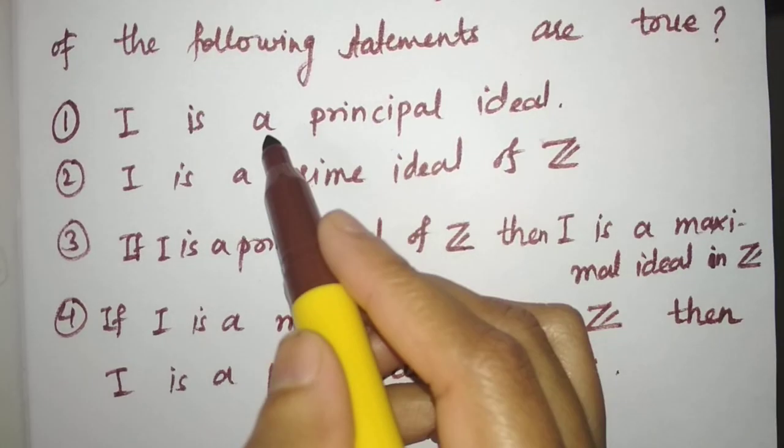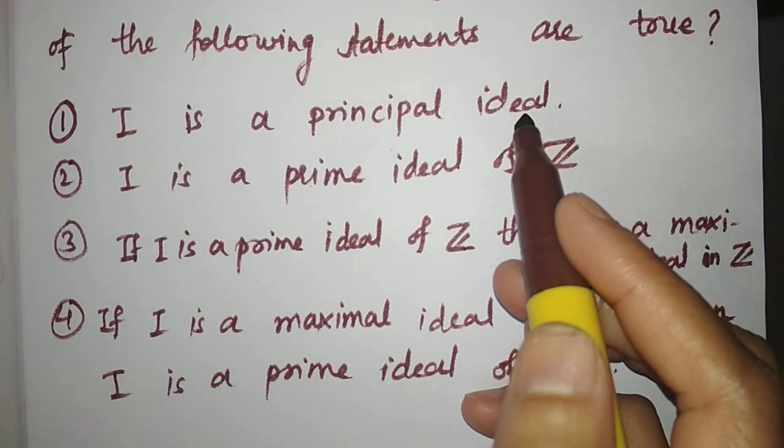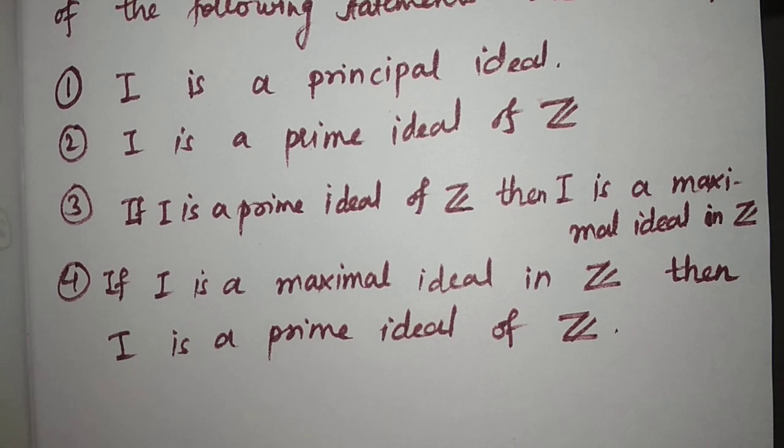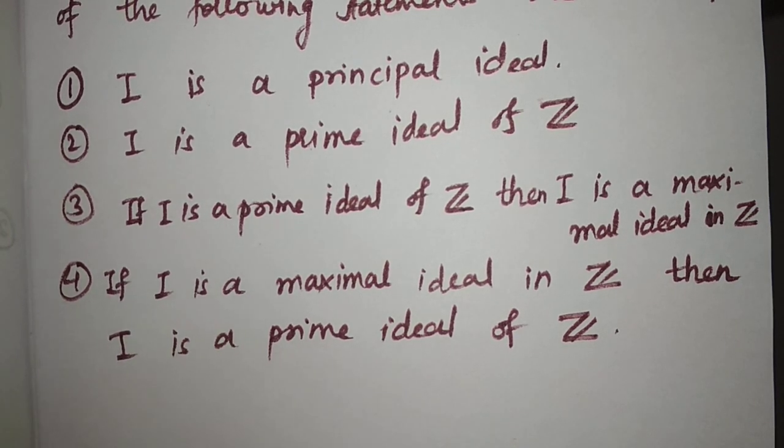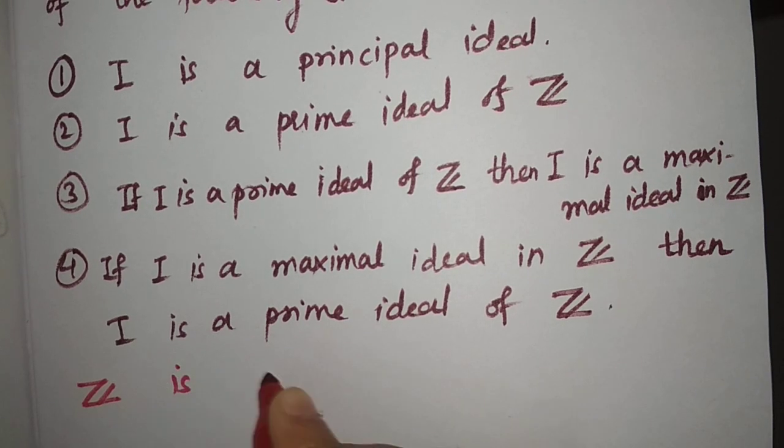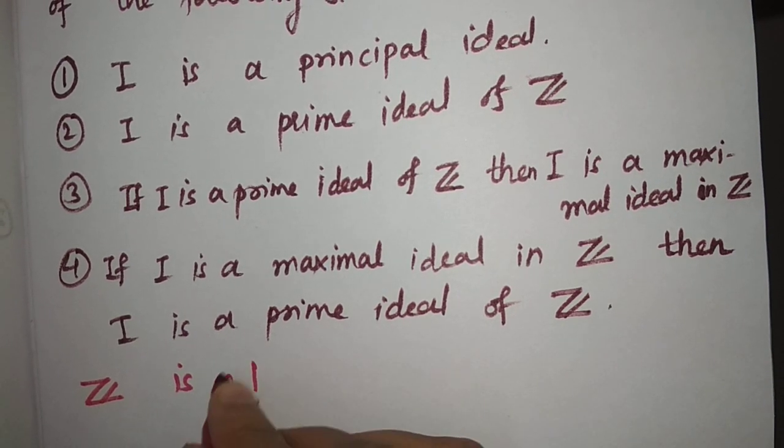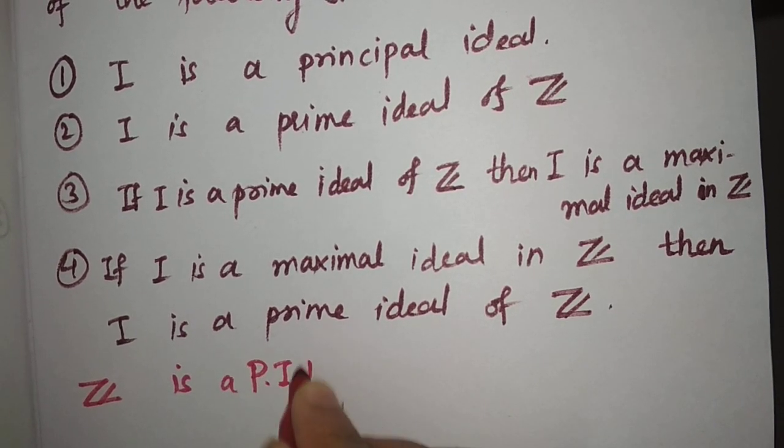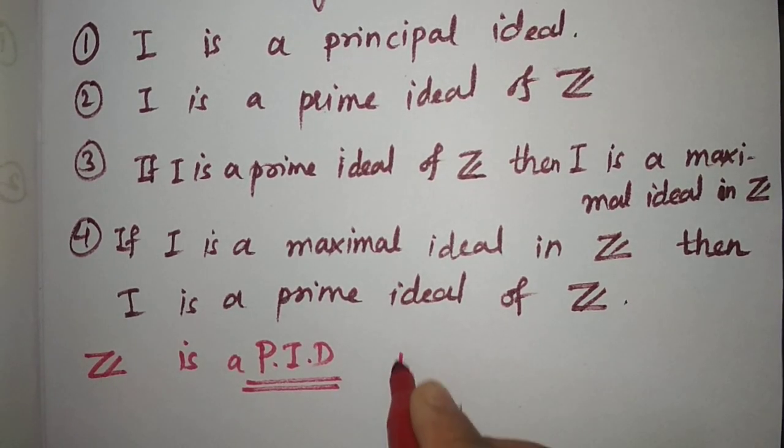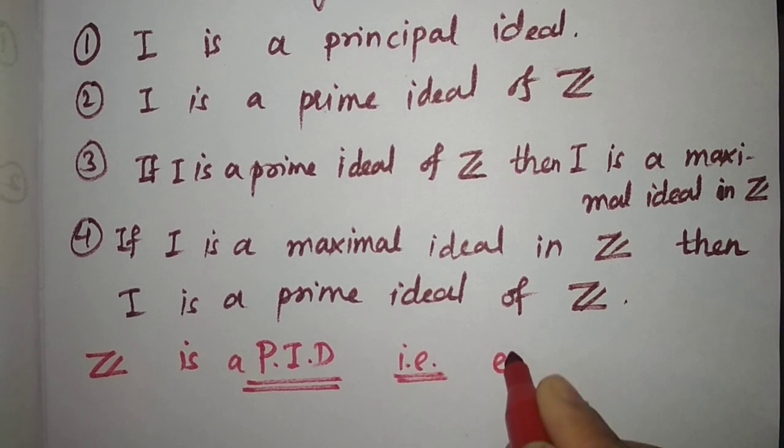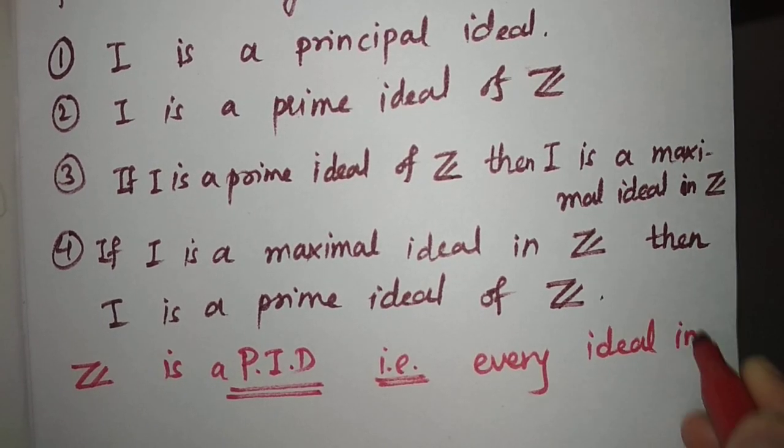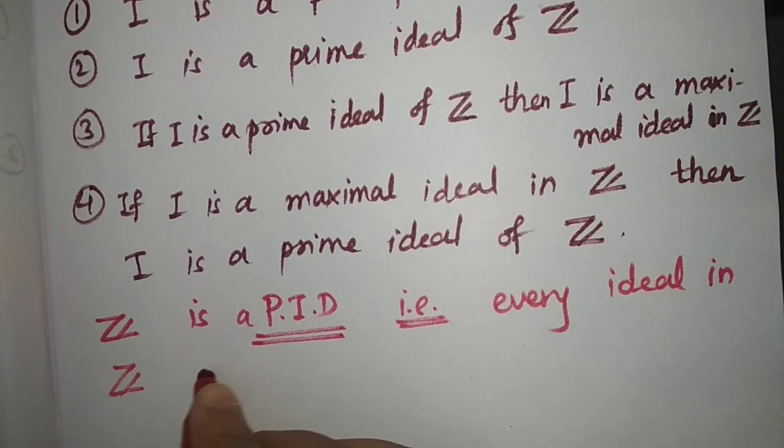I is a principal ideal. Now just note that this Z, this ring, is a PID - Principal Ideal Domain. That means every ideal in Z is principal.